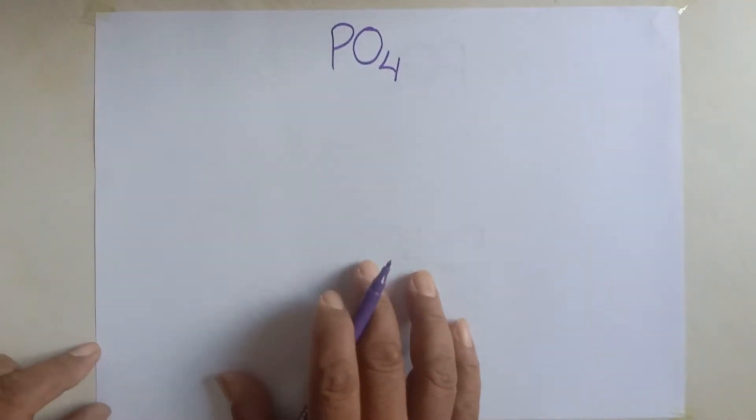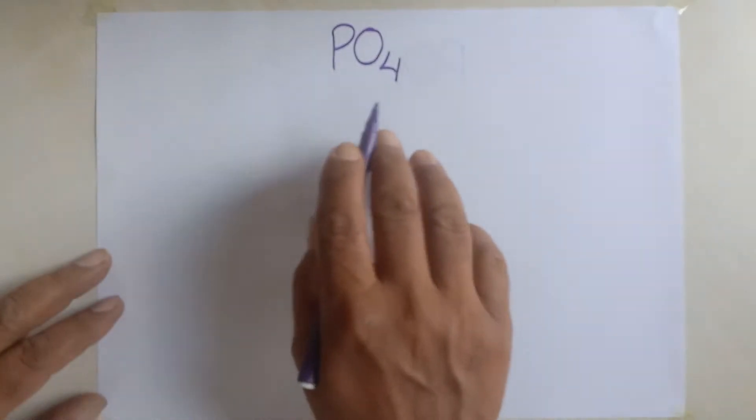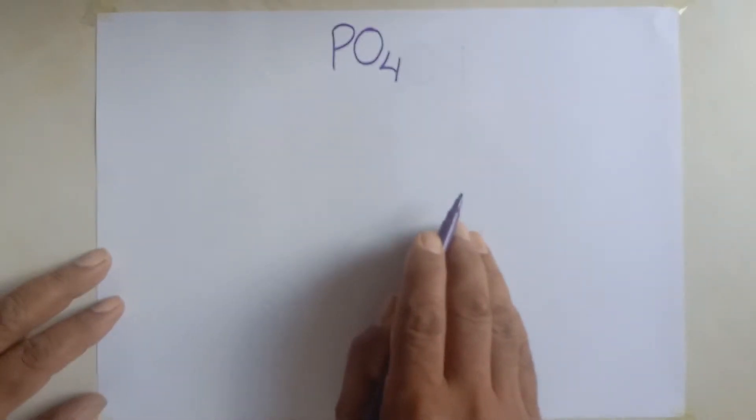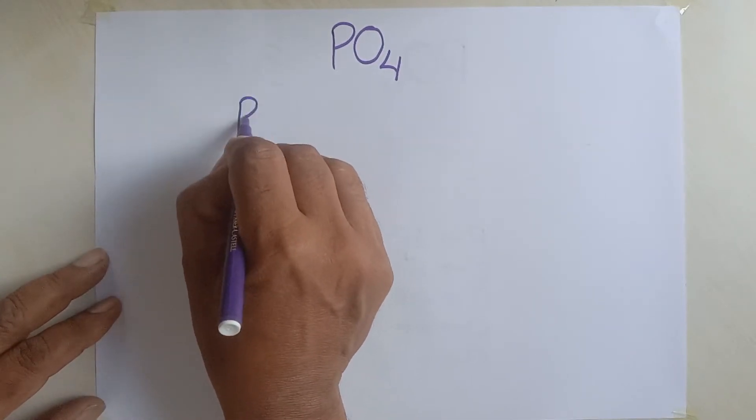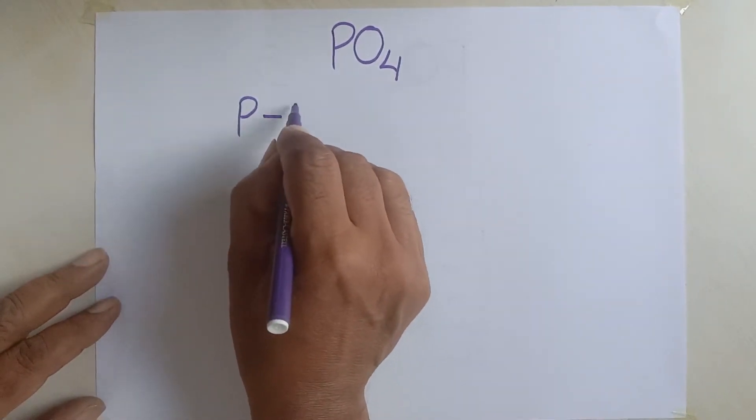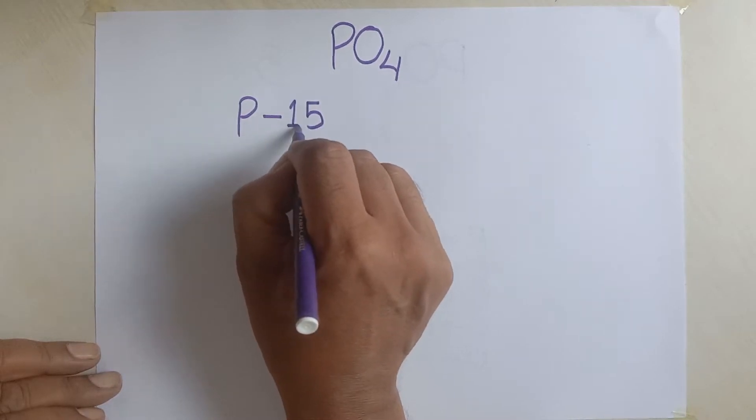In this phosphate, here one atom of phosphorus is combined with four atoms of oxygen. And phosphorus, its electronic configuration is like this. It has got 15 electrons all together in its different shell.